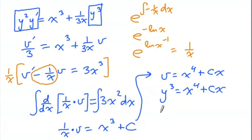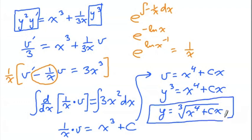And then finally, cube root both sides. There's our solution, with a constant involved. We would need an initial condition to get rid of it. So that is using Bernoulli's method.